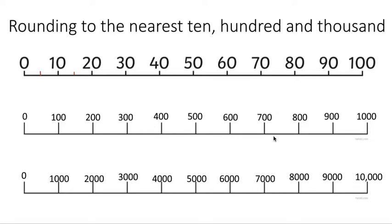That would include 1,100, 1,200, 1,300, 1,400 and so on. Halfway between 0 and 100 you'd find 50. Anything that's 50 and above, you'd round up to 100. Anything below 50, you'd round down to 0. Between 100 and 200 is 150 — anything that's 150 and above you would round up, anything below that you would round down. And between 600 and 700, halfway would be 650. If the number was 650 and above, you'd round it up — it's closer to 700. If it's below 650, you'd round it down to 600.